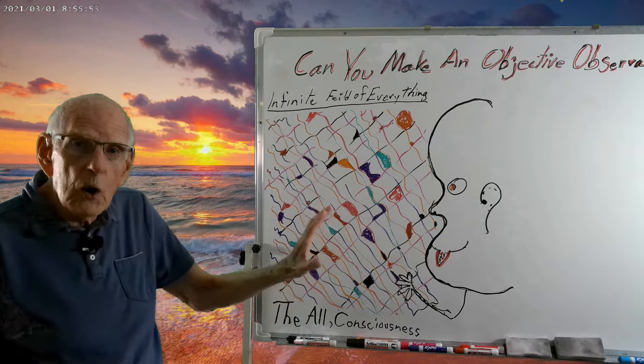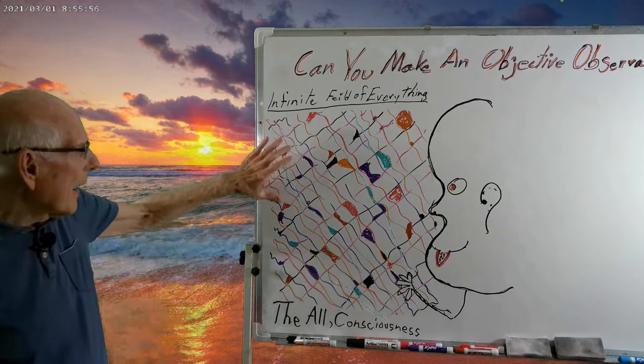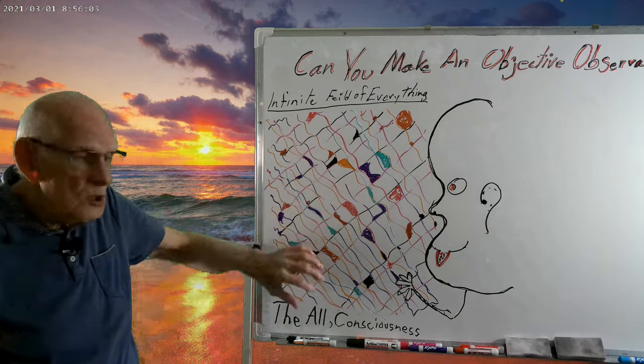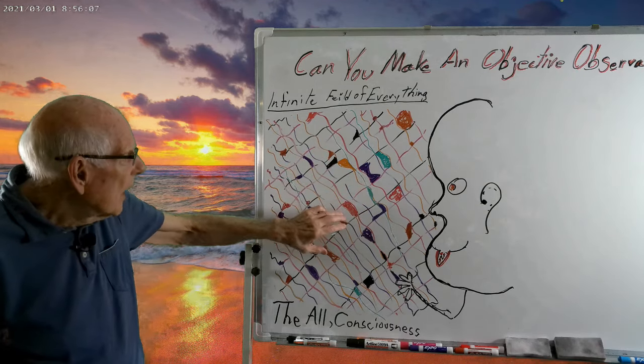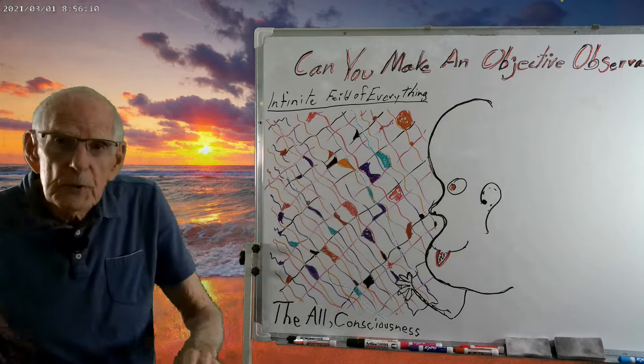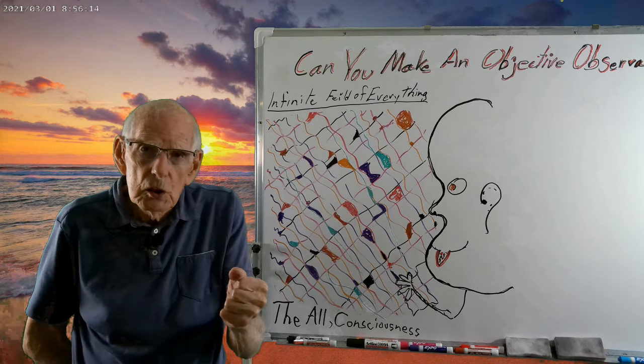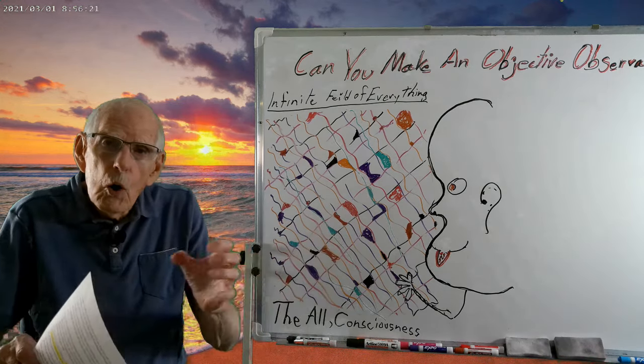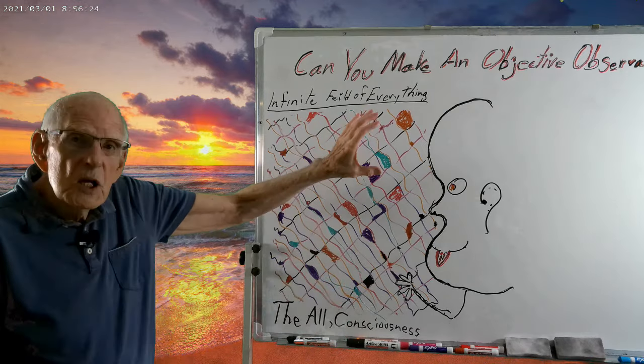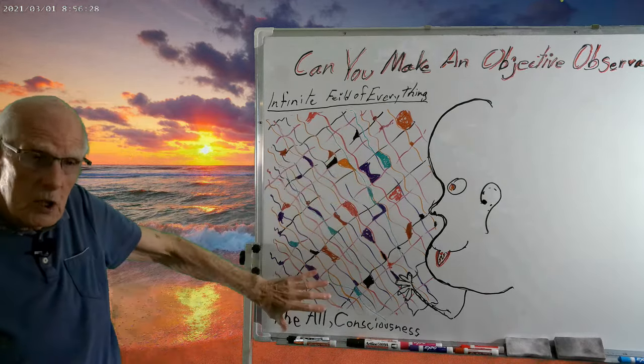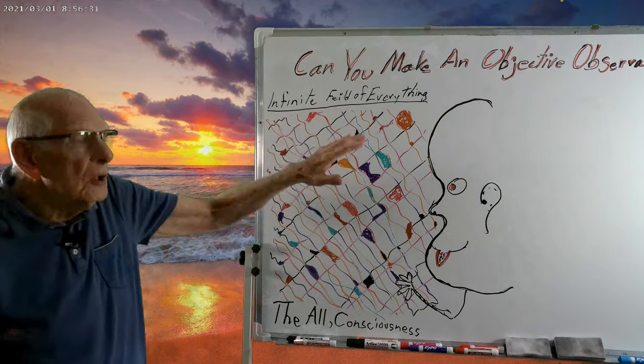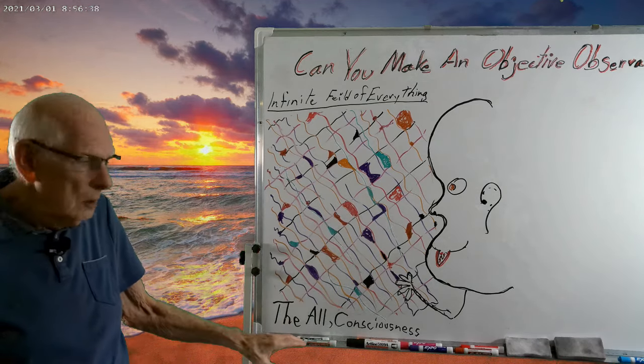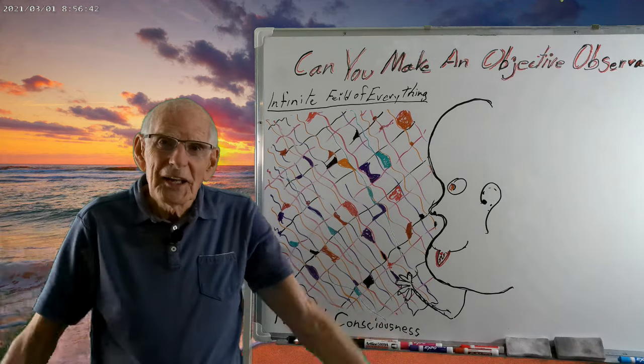But we're going to go on with our subject for today. And I do have some things already on our board. All of these little squiggly lines represents energy. And all the solid areas represent fixed energy. But it is fixed within this energy system, which is the infinite field of everything, also known as the all, or consciousness.